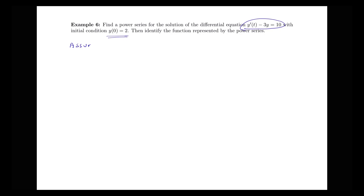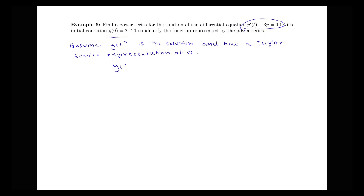We're going to start by assuming that y(t) is the solution and has a Taylor series representation at 0, given by y(t) equals the sum from k equals 0 to infinity of c_k times t to the k. So we have some power series of that form that solves this differential equation, where this equals c_0 plus c_1*t plus c_2*t squared, etc.